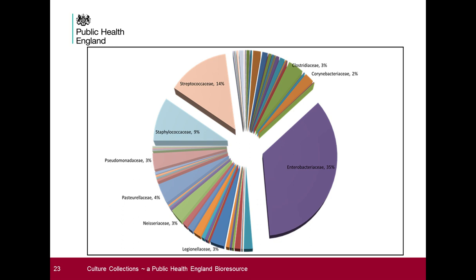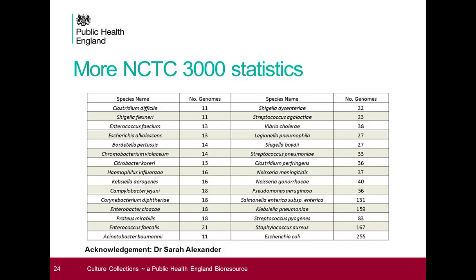The data shows that Enterobacteriaceae are well represented, which reflects the collection's focus on health outbreaks — many caused by Salmonella, Shigella, and E. coli — and hospital-acquired infections including Enterobacter and Klebsiella, all within PHE's remit. In total, 852 species and 82 families represents a pretty broad spectrum of pathogens, including Neisseria gonorrhoeae, Haemophilus influenzae, and Shigella dysenteriae.